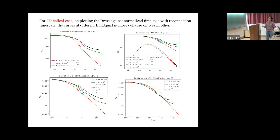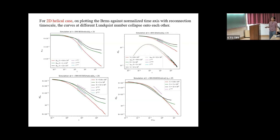For the 2D helical case, when we plot B_RMS versus t, the B_RMS doesn't show a clear power law decay. So we take the helical part, B_H_RMS versus t, and this shows a power law decay in time. On normalizing the time axis with the reconnection timescale, the B_H_RMS curves at different Lundquist numbers — the black one corresponds to the highest Lundquist number — tend to collapse onto each other, showing a power law decay as t to the power minus 0.3.